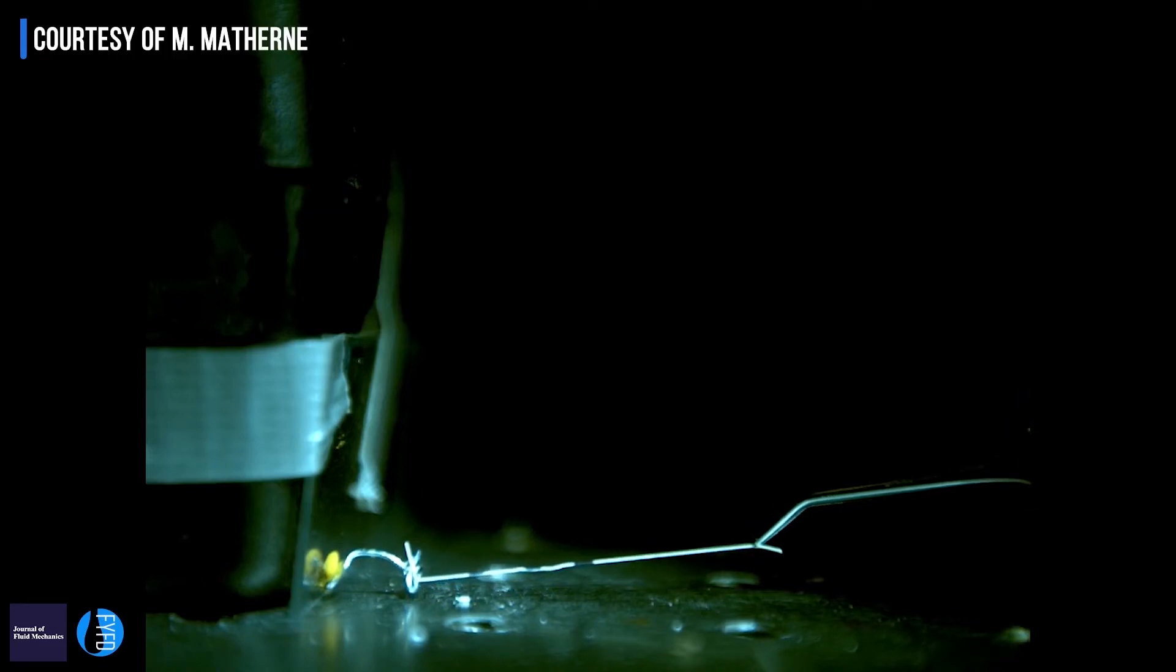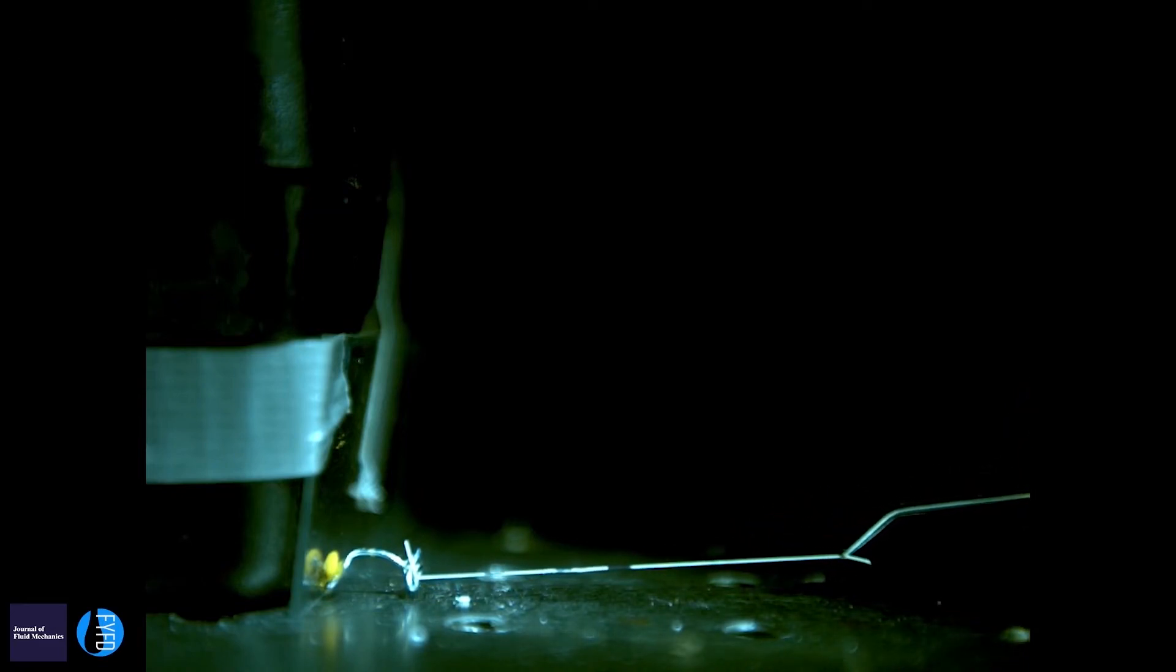And then from there I looked at how strongly these pellets are adhered to the leg. So I did this by gluing a leg to a slide and then gluing a wire to the pellet and pulling it off with an elastic string. The elastic string acts like a spring, so you can measure the amount that this string deflects and then you can measure the force that way.